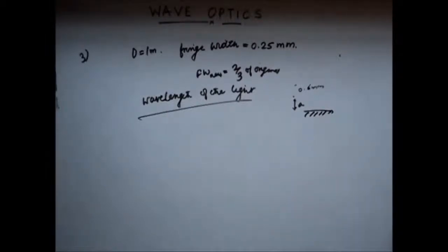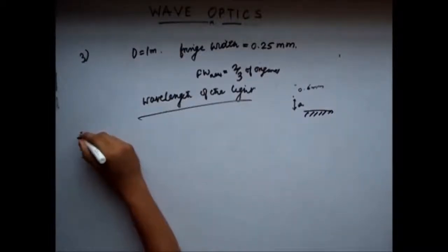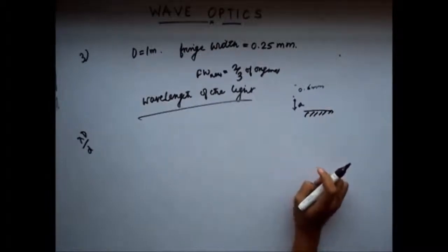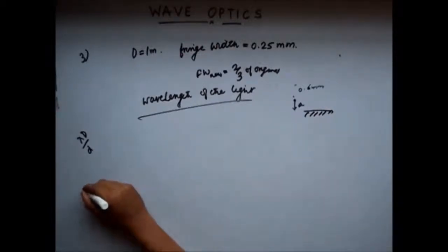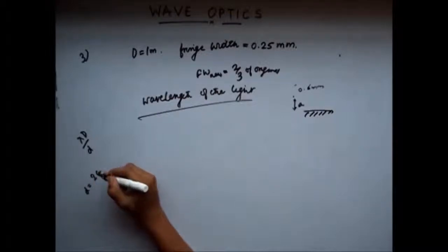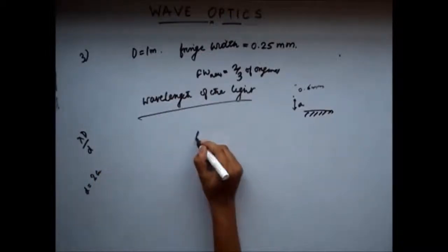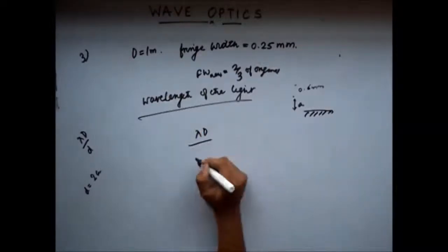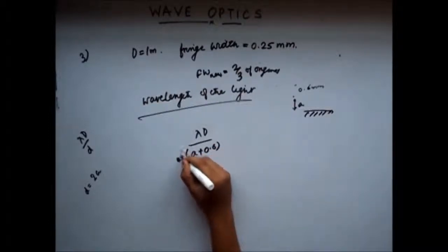So, you know that the fringe width is given by lambda d by d. What is d in case of a Lloyd's mirror? It is 2 into a. So, lambda d by, what is the new distance? a plus 0.6. This is into 2.